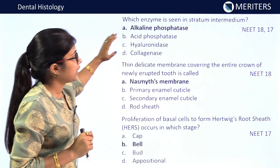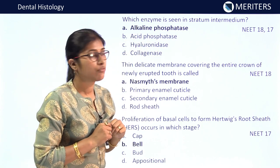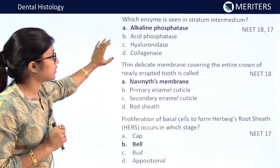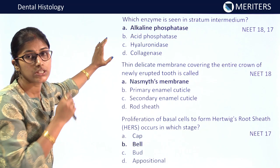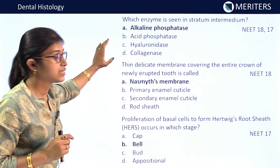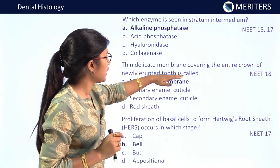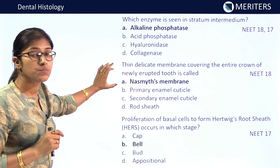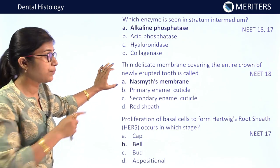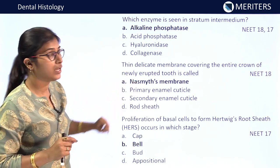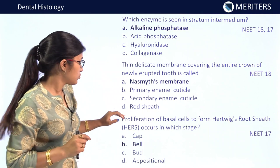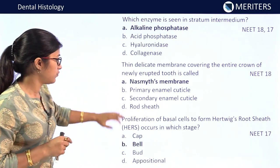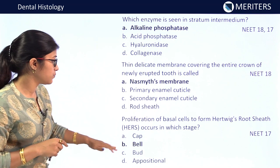Which enzyme is seen in the stratum intermedium? Alkaline phosphatase — this question appeared in NEET 2018 and 2017. A thin delicate membrane covering the entire crown of a newly erupted tooth is called Nasmyth's membrane — this appeared in NEET 2018. Proliferation of basal cells to form Hertwig's epithelial root sheath occurs in which stage? Bell stage — appeared in NEET 2017.